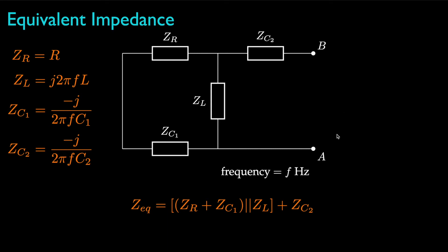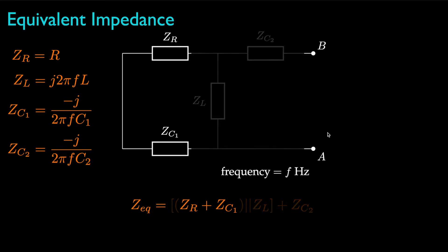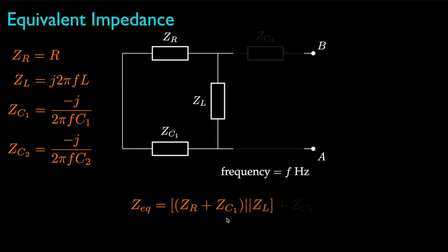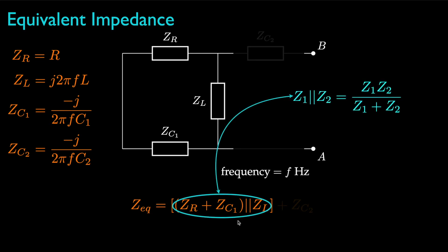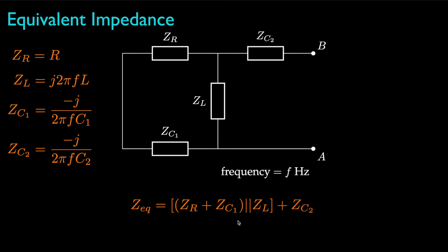To see this, we start with the resistor and the capacitor that are in series and combine them by summing their impedances. Then we combine those in parallel with the impedance for the inductor by using the same mathematical relationship we use for two resistors that are in parallel. Finally, we combine that equivalent impedance with the impedance for the other capacitor to make the equivalent impedance for the four elements.